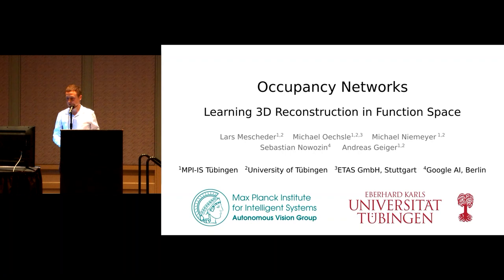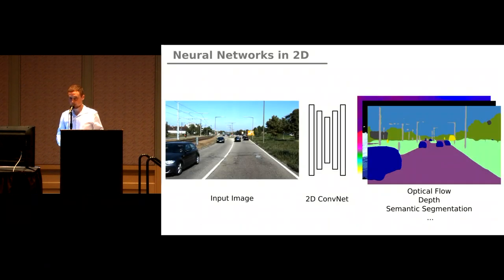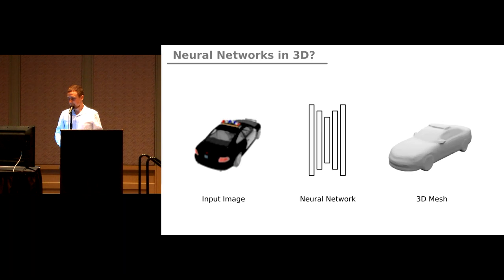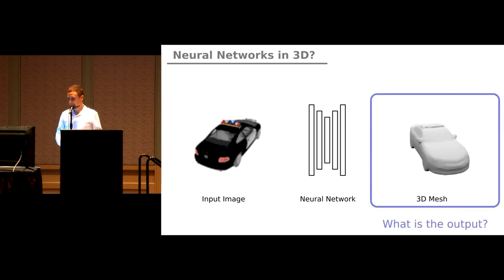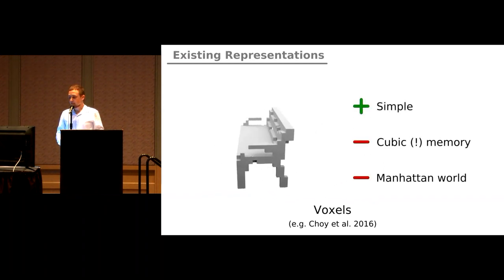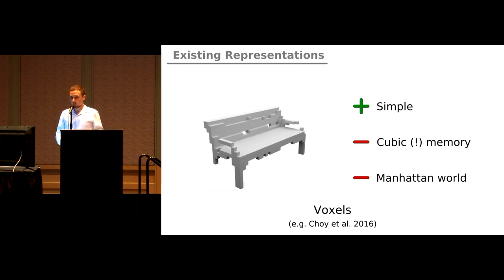I'm Lars Mescheder from the Max Planck Institute for Intelligent Systems. I present Occupancy Networks, a method for learning 3D reconstruction in function space. Convolutional neural networks have revolutionized 2D vision, but our world is 3D. We want network architectures that directly output 3D meshes. Existing representations — voxels, point clouds, and mesh-based approaches — suffer from cubic memory requirements, lost connectivity, or require template meshes and produce artifacts like self-intersections.